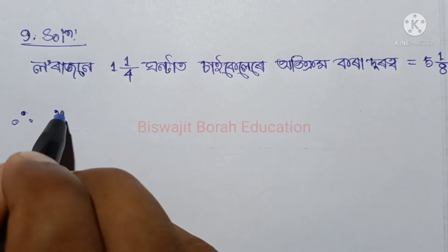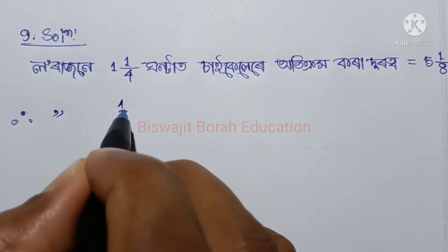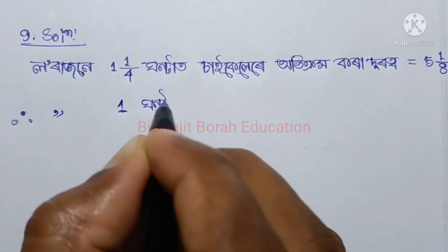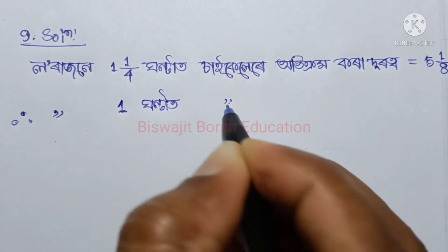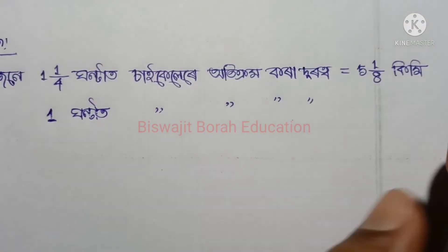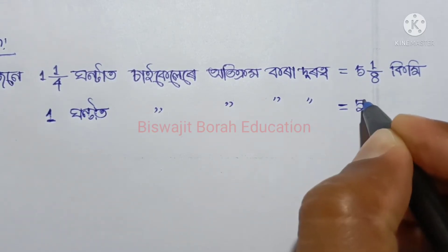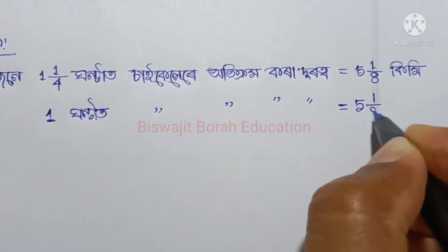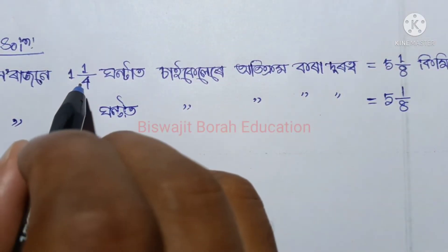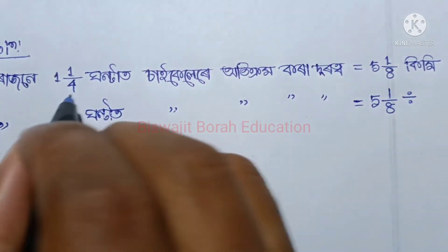How many kilometers does the bicycle cover in one hour? We are given 5 and 1/8 kilometers in 1 and 1/4 hours. We write 5 and 1/8, then divide by 1 and 1/4 to find the speed per hour. We need to compute this division.